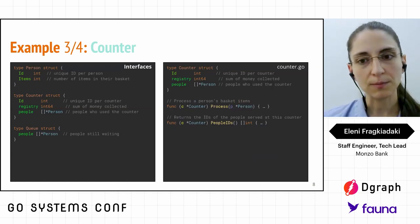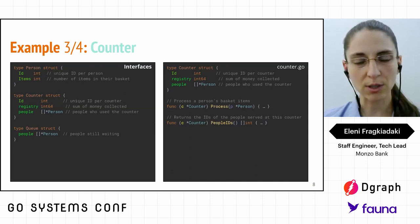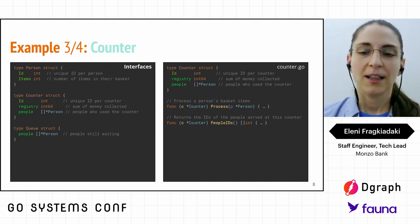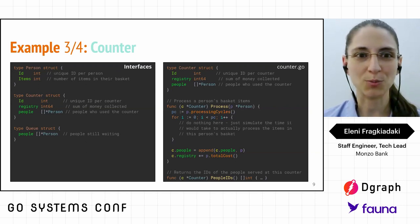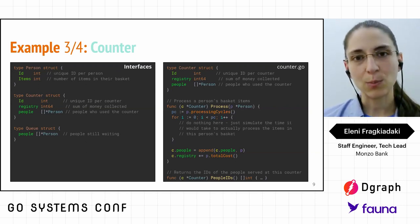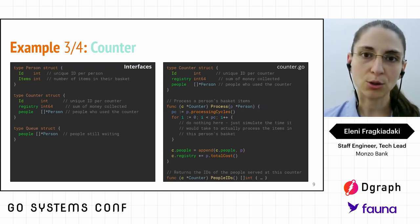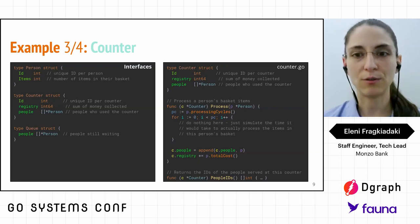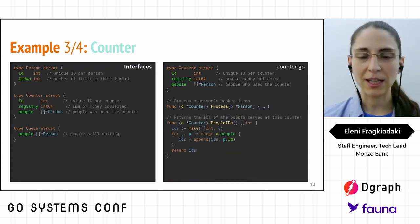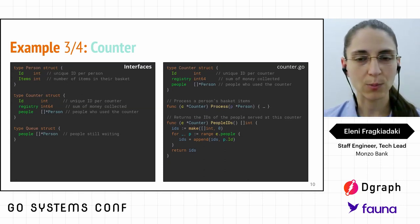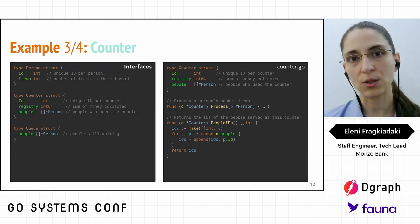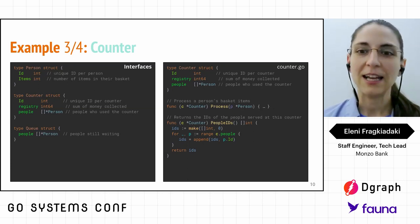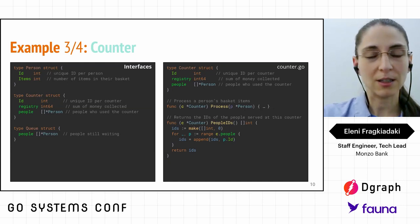The Counter has two functions: Process and PeopleIDs. The Process function accepts a person as a parameter, introduces the artificial delay, appends that person to the people being served by this counter, and adds the total cost of the basket into the registry — the amount of money collected. PeopleIDs is a smaller function that looks through all people processed by the counter and creates a list of just their IDs, which is useful for debugging output.